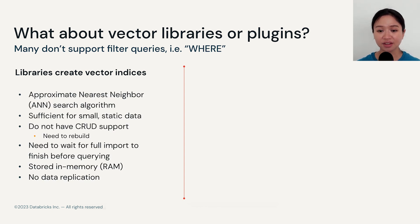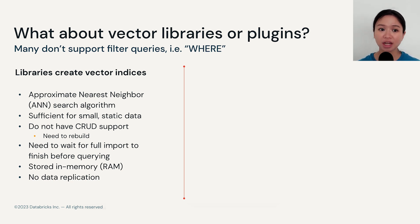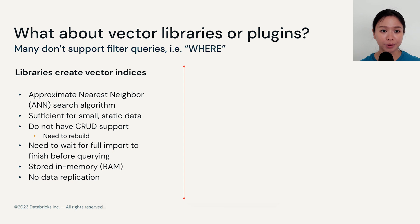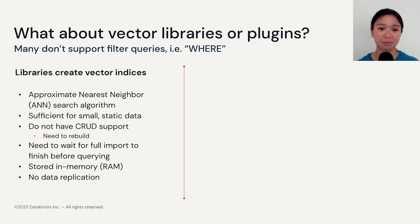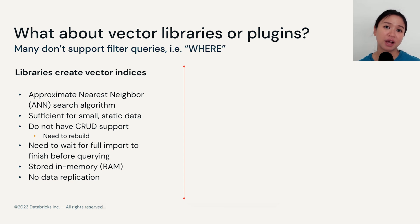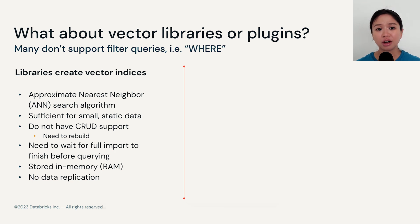A vector library like FAISS is often sufficient for small and static data. But vector libraries do not have database properties, meaning you wouldn't expect a vector library to have CRUD support, data replication, or the ability to store data on disk. You'll probably just have to wait for the full import to complete before you can query, and every time you make changes to the data, the vector index will have to completely rebuild from scratch. So whether or not you use a vector database or a vector library really comes down to how often your data changes, and whether you need the full-fledged database properties that come with a vector database.